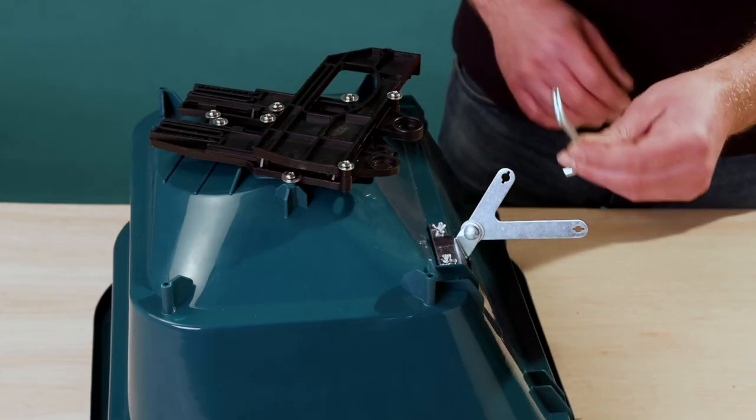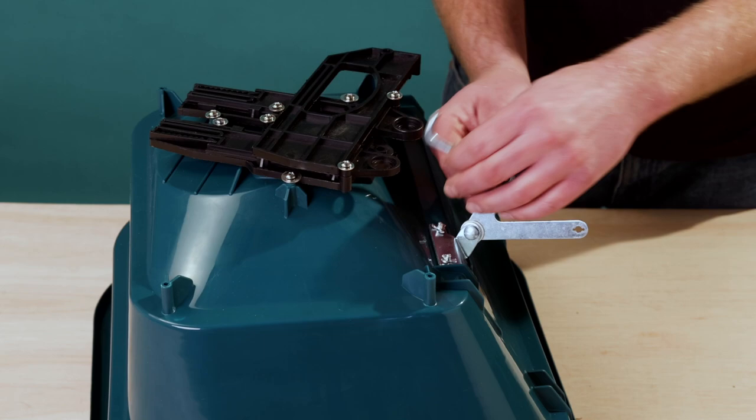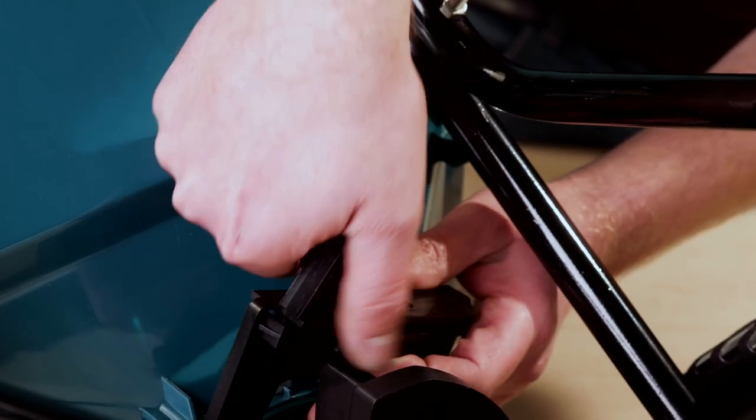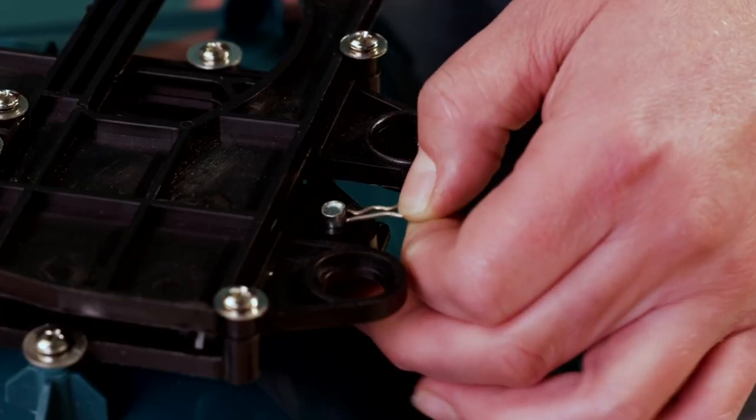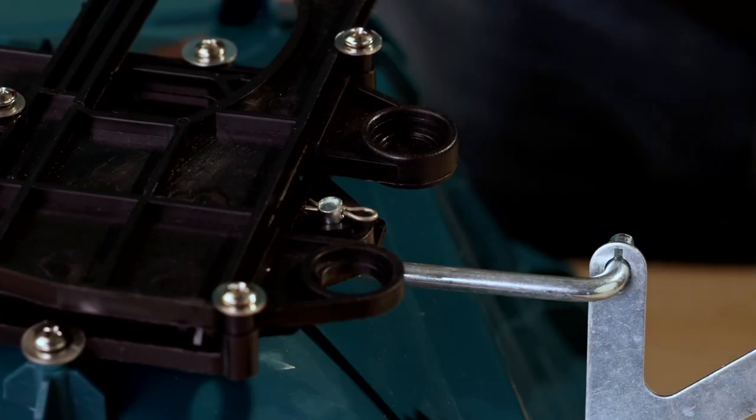Locate the lower linkage and place it through the pivot bracket. Push the free end of the lower linkage. Secure the lower linkage in place using the small R pin as shown in the video.